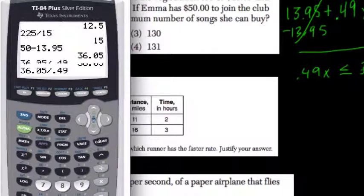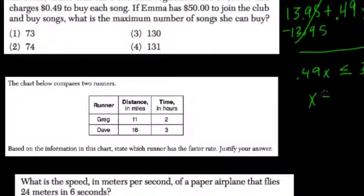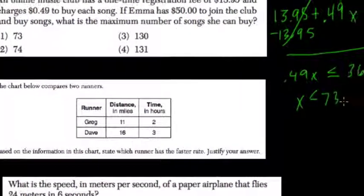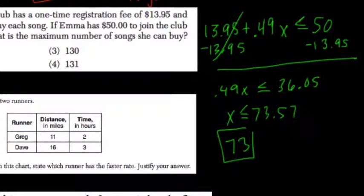So set it up. And okay, so 73. So x has to be less than or equal to 73.57 songs, but you can't buy 0.5 of a song, so she can buy 73. It's full songs, right? Choice one.